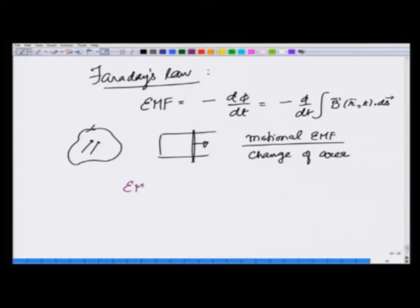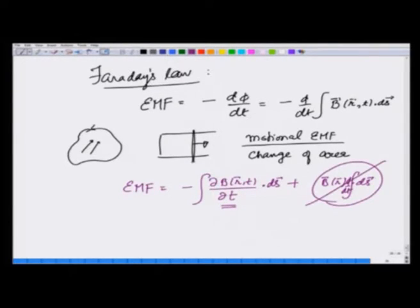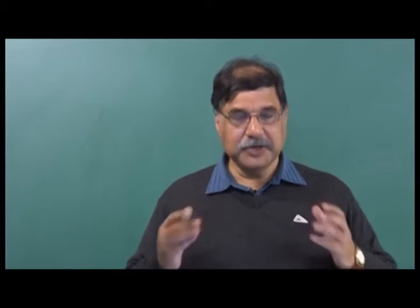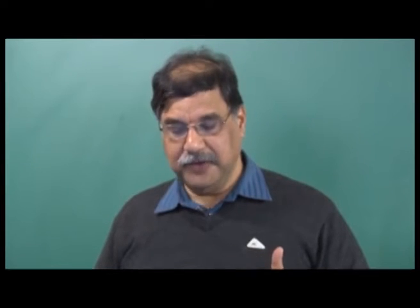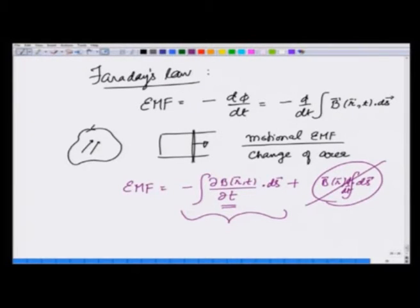EMF could have two terms: minus (if B is changing with time) partial B by partial t (I am putting a partial derivative here because at a given r only t is changing) dot dS, plus I could have B fixed with no dependence on t dot dS and this could be changing with time. We have seen its effect, now we want to focus on this, because this gives you relationship between a field which is generated due to change in magnetic field—a field which is generated is the electric field due to change in magnetic field.